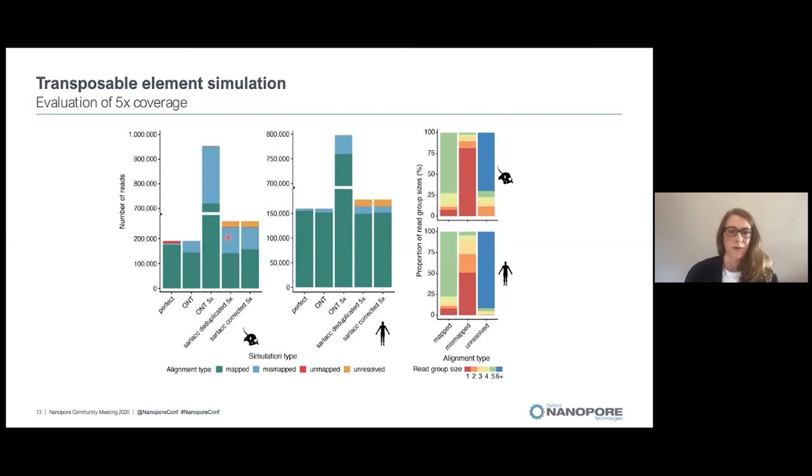However, we still have a lot of mismapped reads. It is a bit worse in the mouse genome than in the human genome because the LINE elements in the mouse genome are younger than the humans.